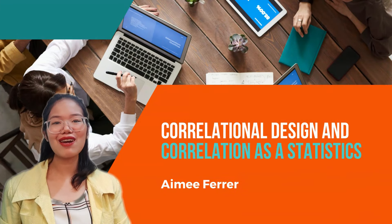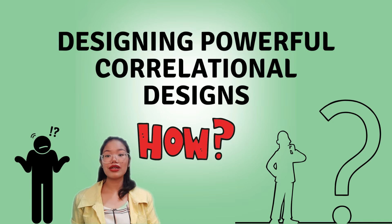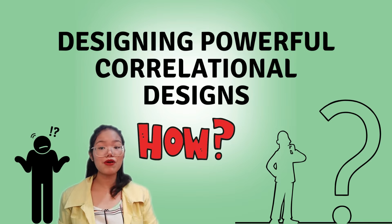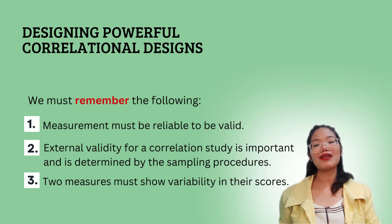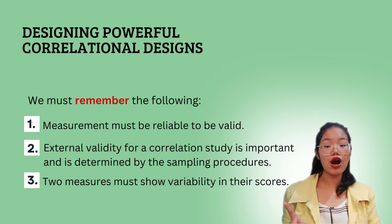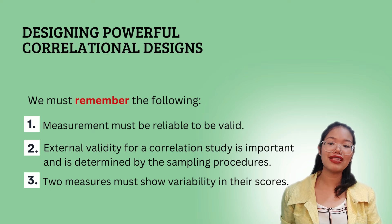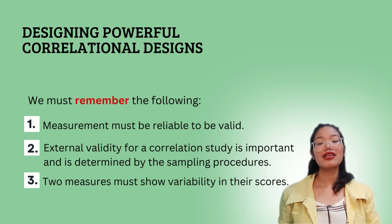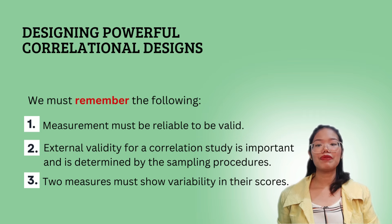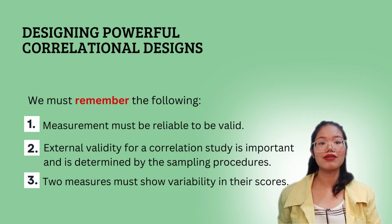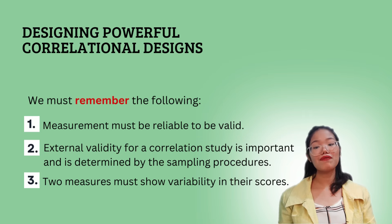I'm Amy Ferrer, and I'll be discussing how to make a powerful correlational design. In correlational design, we increase the power of the study by ensuring that the measurement we use is reliable in order for it to be valid — it is hard to see the relationship between two variables if the measurement is unreliable or inconsistent. It is also important for our correlational study to have external validity, determined by sampling procedures. Additionally, the two measures must show variability in their scores.